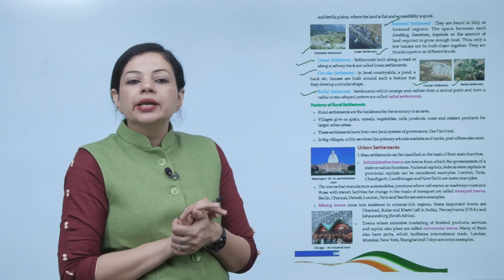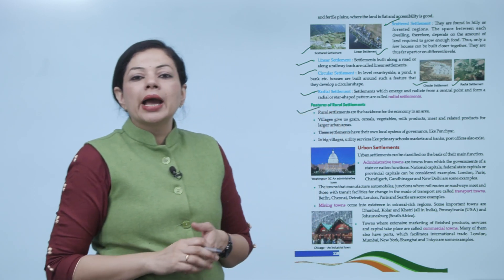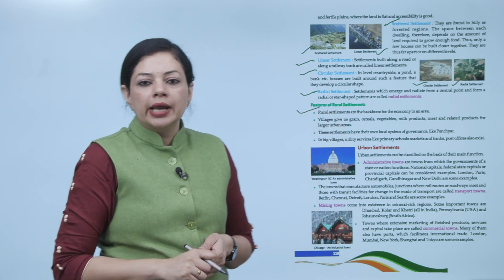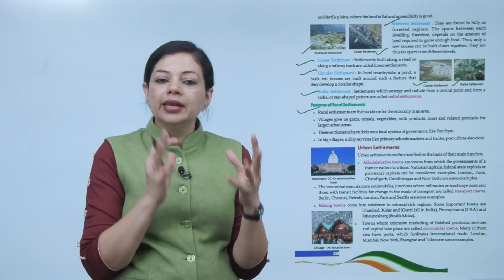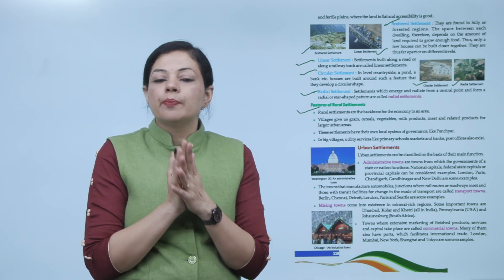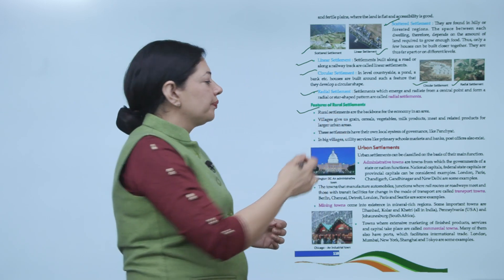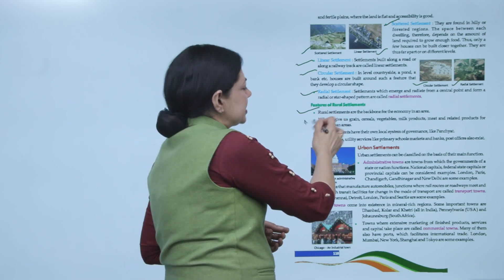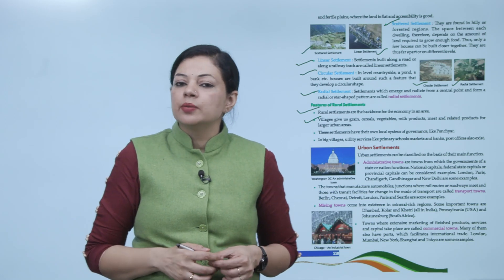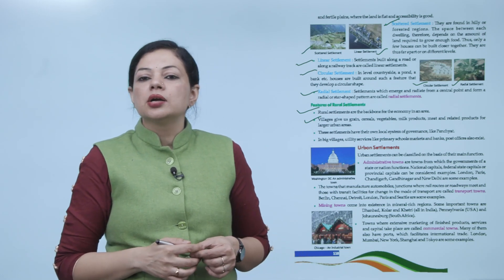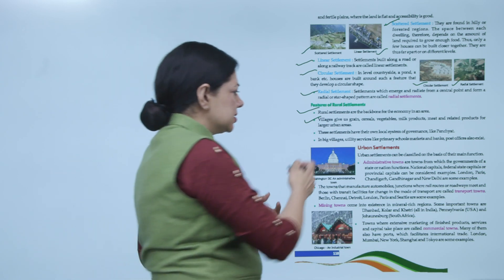What are the characteristics of rural settlement? First, they are the backbone of the economy in an area, because most people do agriculture. Second, villages give us grain, cereals, vegetables, milk products, meat and related products for larger urban areas.